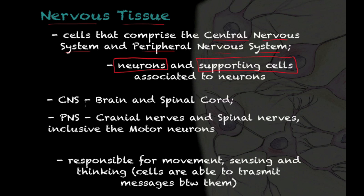The physical structures comprised of nervous tissue in your central nervous system, also known as the CNS, are your brain and your spinal cord. In your peripheral nervous system — the nervous system on the periphery or edges of your body — you have the cranial nerves, spinal nerves, and also the motor neurons.